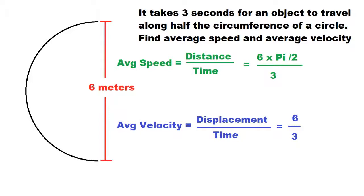Then to find the average velocity, we have to use the displacement, which is if you were to draw a straight line from your start point to your end point. That distance would be the displacement.